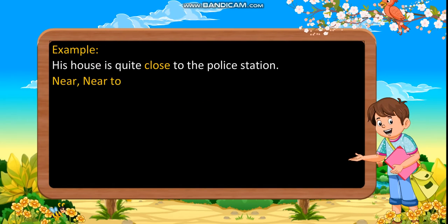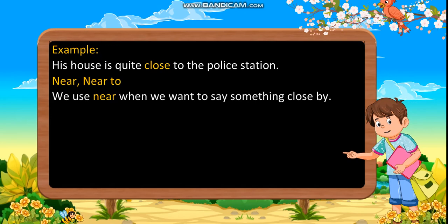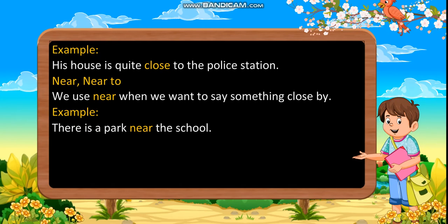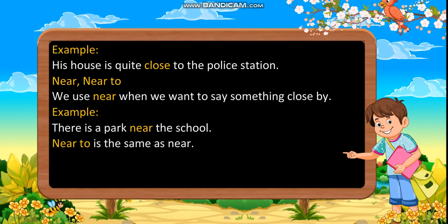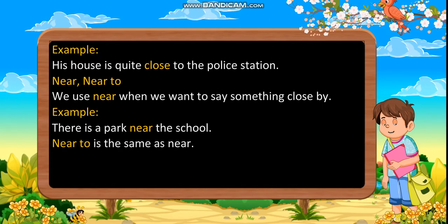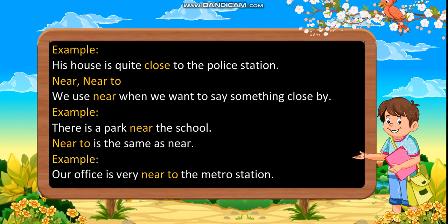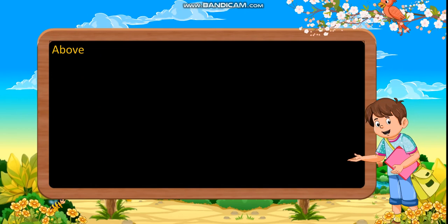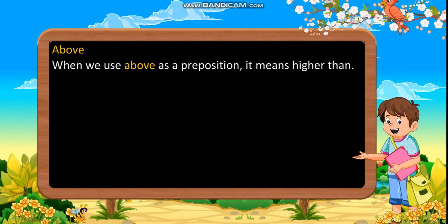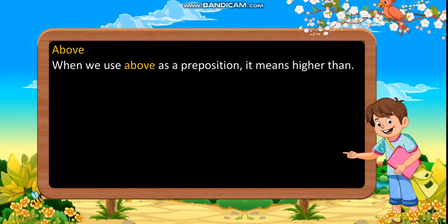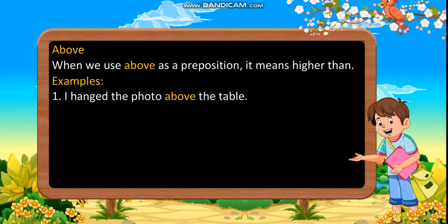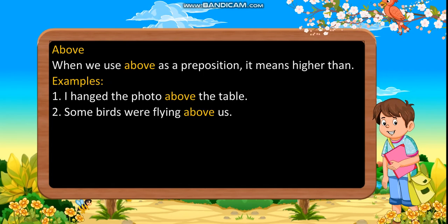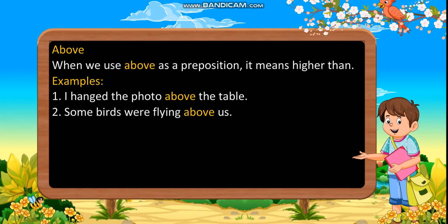Near, near to. We use near when we want to say something close by. Example: there is a park near the school. Near to is the same as near. Example: our office is very near to the metro station. Above: when we use above as a preposition, it means higher than. Examples: first, I hanged the photo above the table. Second, some birds were flying above us.